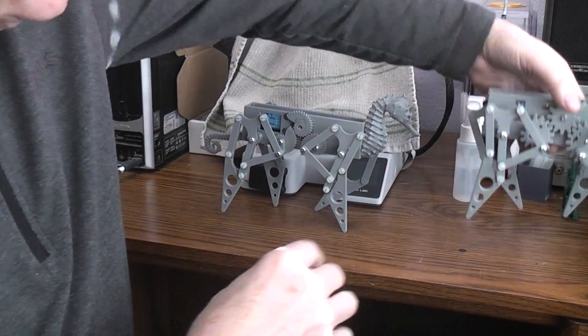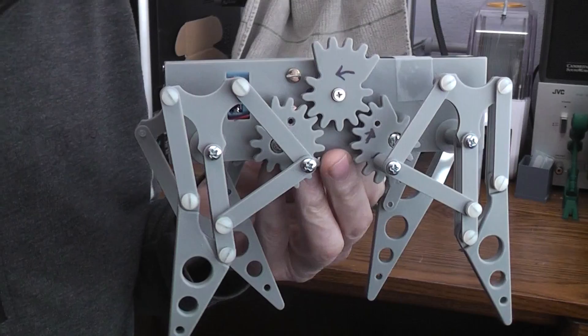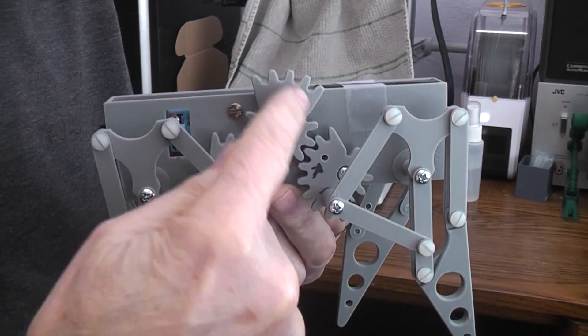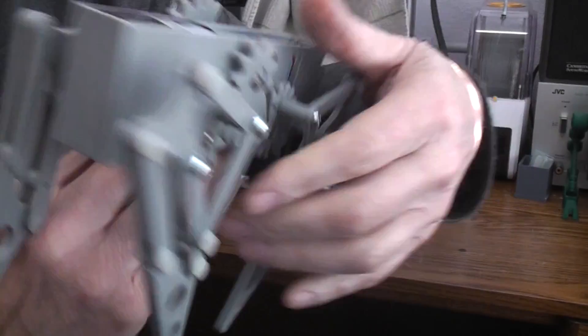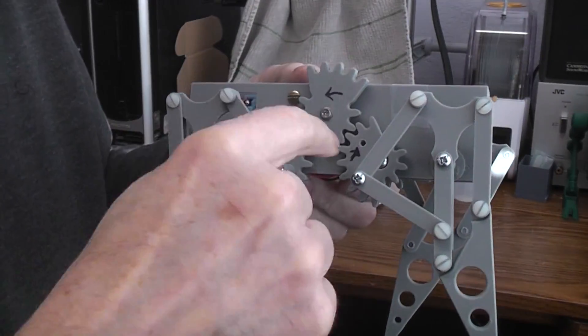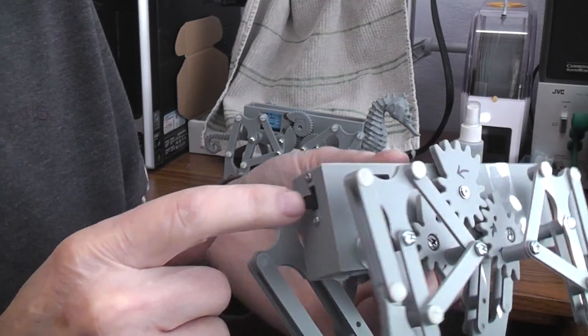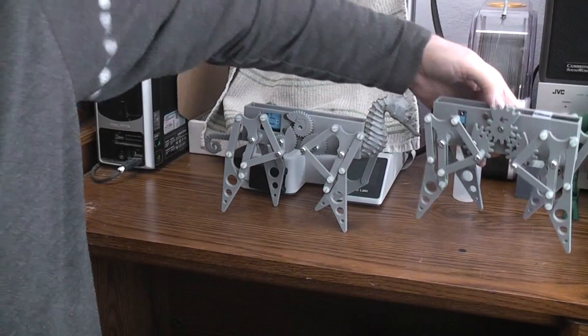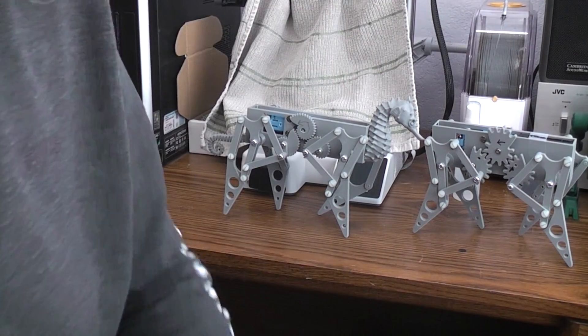This design can only walk forward because of the Nautilus gears, the way they ramp. This design though can walk forward or backward, it's not going to make any difference because the gears are symmetrical. Yes you have one side at a phase from the other but it works the same way where no matter what direction the motor is running. I could have put a three position switch here and had it walk forward or backward and it wouldn't have made any difference.